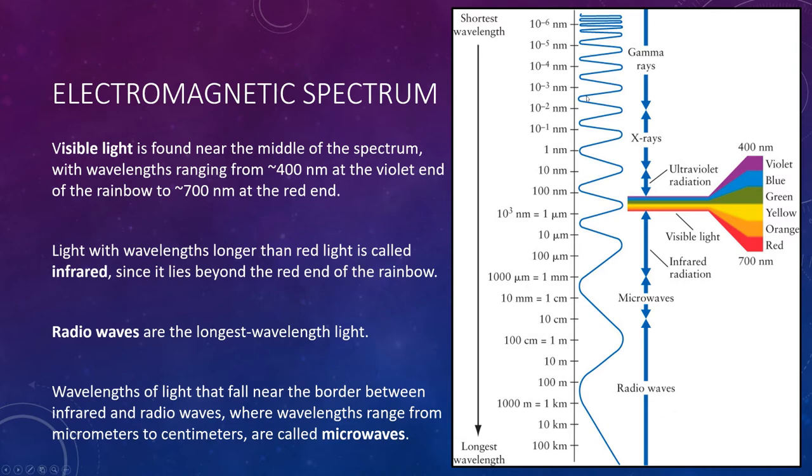Here is the electromagnetic spectrum shown in a different way. The light that our eyes can see, which we call visible light, is found near the middle of the spectrum, with wavelengths ranging from about 400 nanometers at the blue or violet end of the rainbow to about 700 nanometers at the red end. By the way, a nanometer is one billionth of a meter.